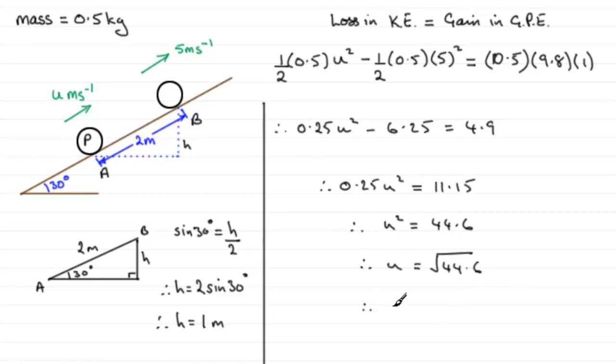Take the square root of both sides. Square root of 44.6 gives u equals 6.6783 and so on, which we could round to two significant figures, so u equals 6.7 meters per second. I hope it's given you some idea how to go about that first part of this question.